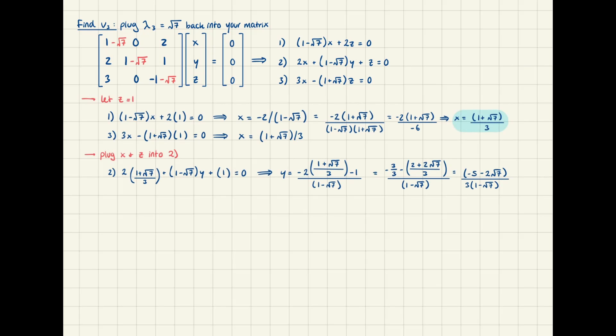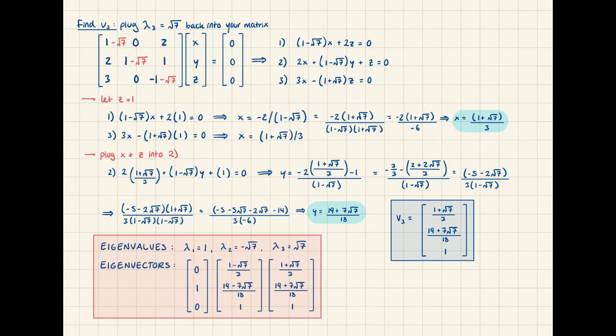The steps proceed pretty much identically to the last one, but just with inverted signs. 1 minus root 7 becomes 1 plus root 7, and 19 minus 7 root 7 becomes 19 plus 7 root 7. And that's about it. We found all three eigenvalues and a viable eigenvector to correspond with each one.